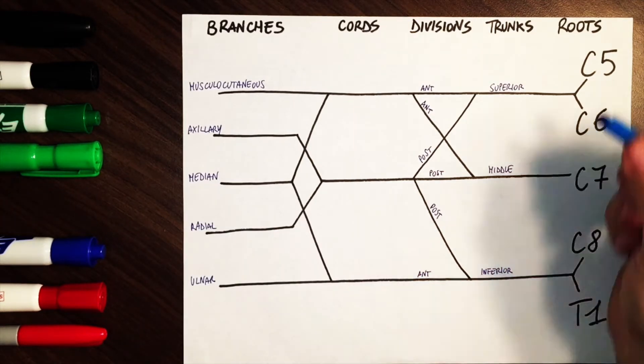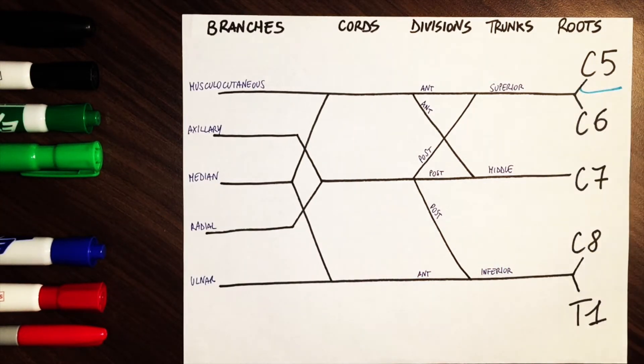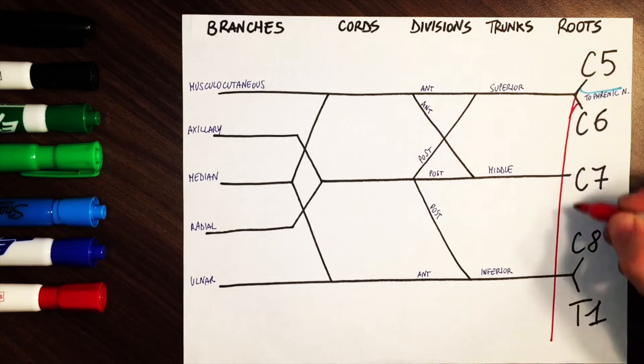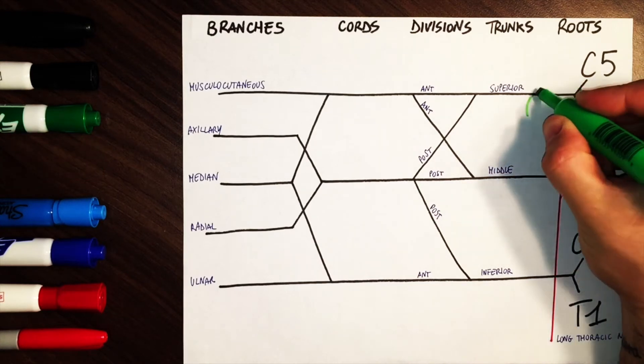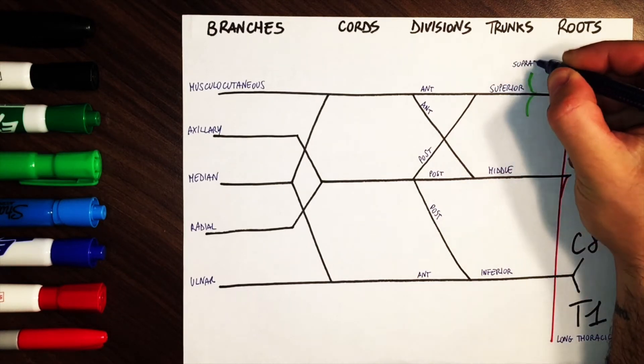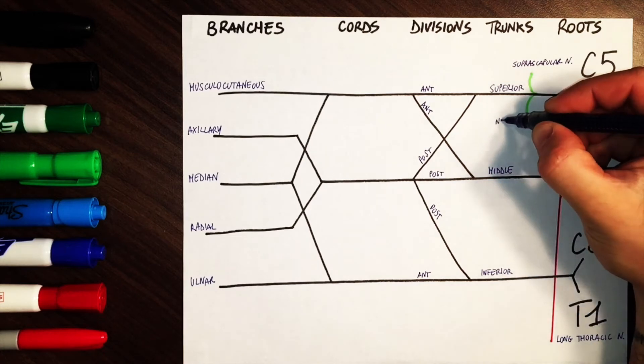Now that we're familiar with the basic structure, let's add some details. From C5, we have a branch that contributes to the phrenic nerve, which innervates the diaphragm. From C5, C6, and C7, we have the long thoracic nerve, which innervates the serratus anterior muscle. From the superior trunk, we have the suprascapular nerve and the nerve to subclavius.